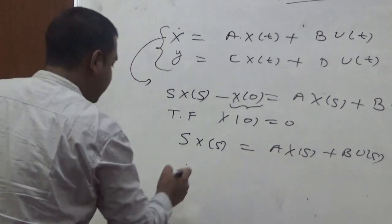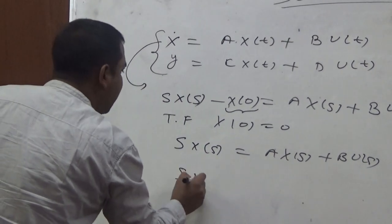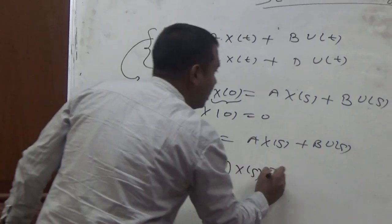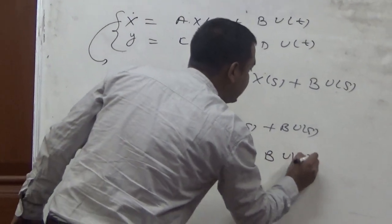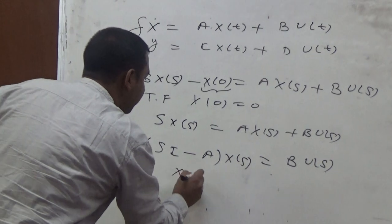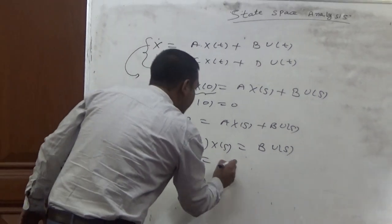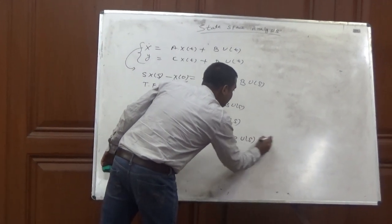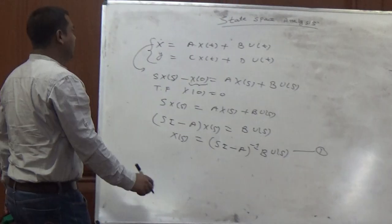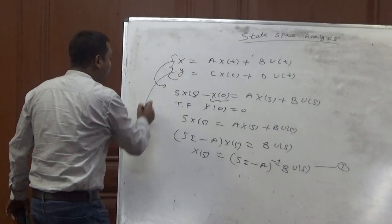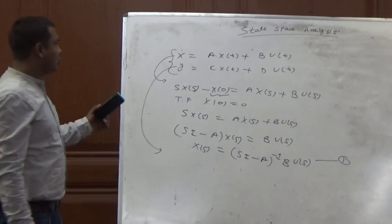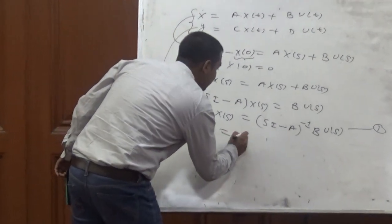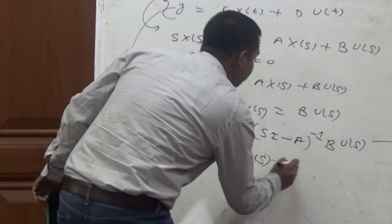Rearranging, we take (sI minus A) times X(s) equals B times U(s). From this, X(s) equals (sI minus A) inverse times B times U(s). This is Equation 1. Now taking the Laplace transform of the output equation on both sides, we have Y(s) equals CX(s) plus DU(s).